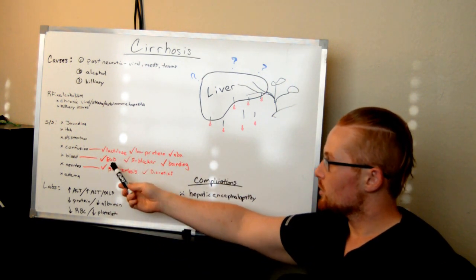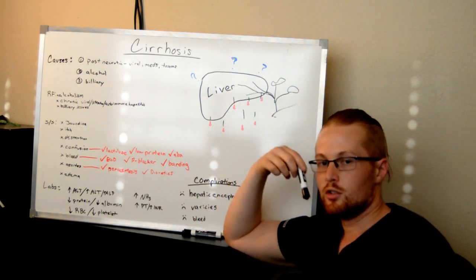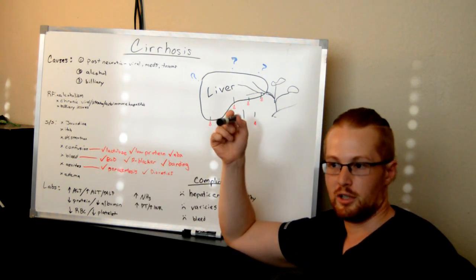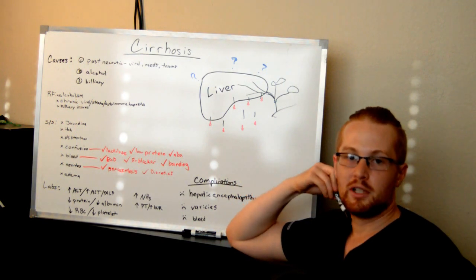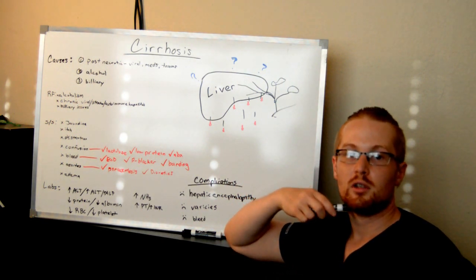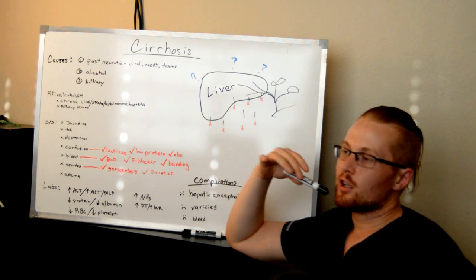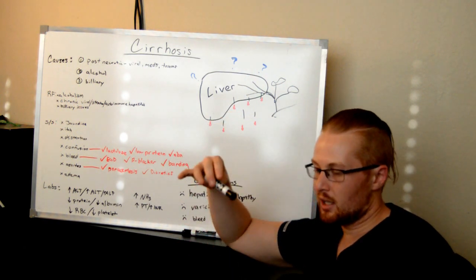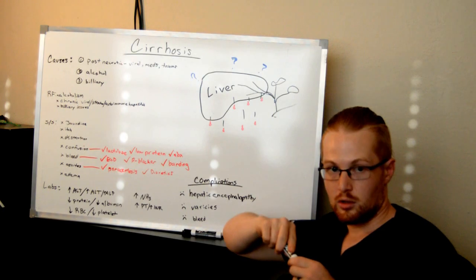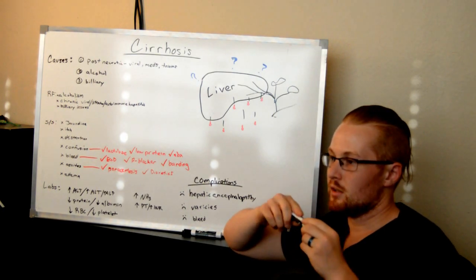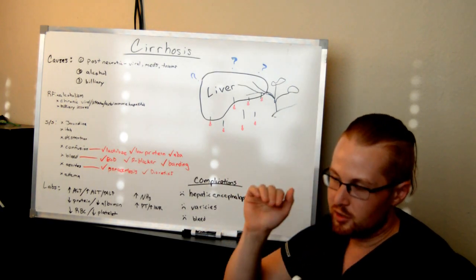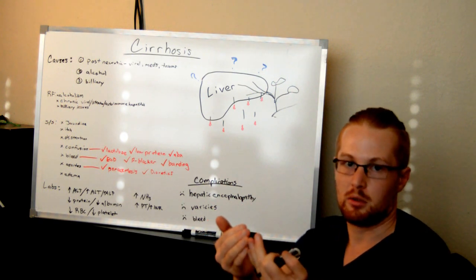For bleeding, they will do an EGD, in which case they'll go into the patient and look and find the source of the bleeding. These patients have a high risk for bleeding in the esophagus because the blood vessels that go from the esophagus and the stomach to the liver, the blood is backed up in the liver because of the damage.